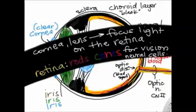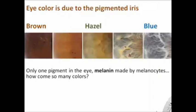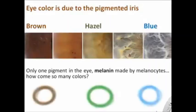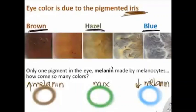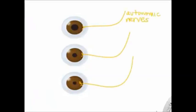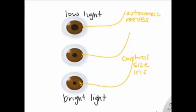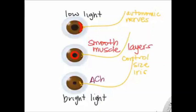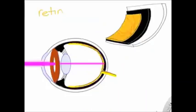Eye color is due to the iris and its single pigment, melanin. Blue eyes have little melanin; brown eyes have much more; hazel is in between. You can even see clusters of melanin in the iris like freckles. The iris contains smooth muscle layers controlled by the autonomic nervous system: in low light the pupil dilates (iris opens); in bright light the pupil constricts (iris closes). Different autonomic neurotransmitters control these opposing movements.